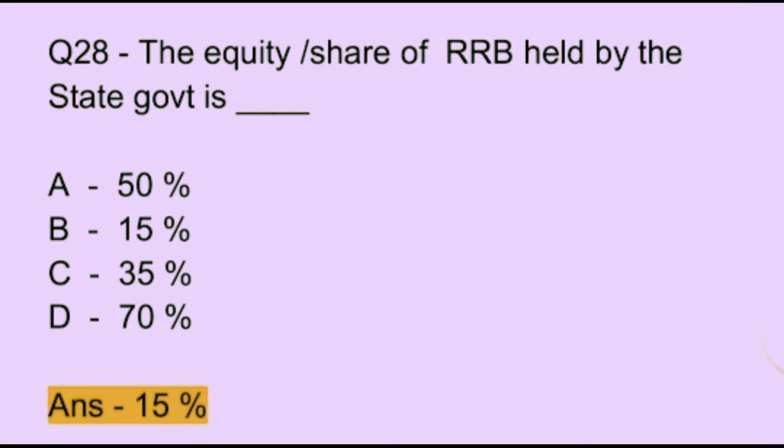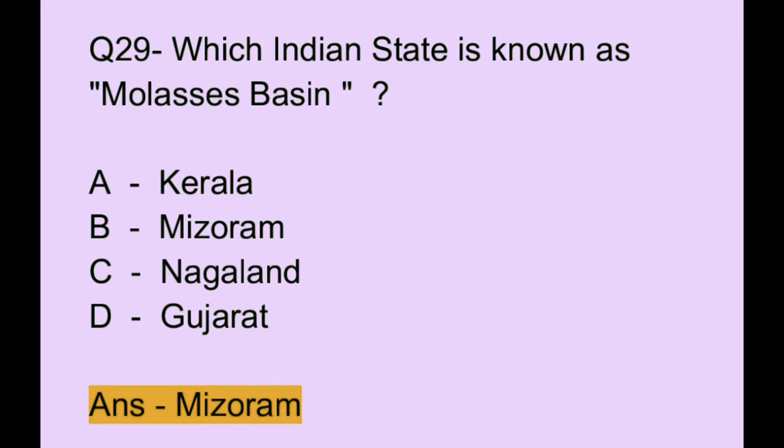Question number 28. The equity or share of RRB held by the state government is: Option A: 50%. Option B: 15%. Option C: 35%. Option D: 70%. The correct answer is option B, which is 15%.